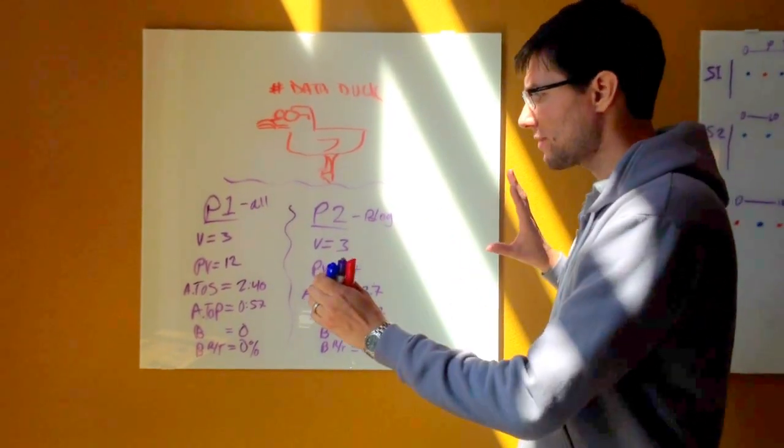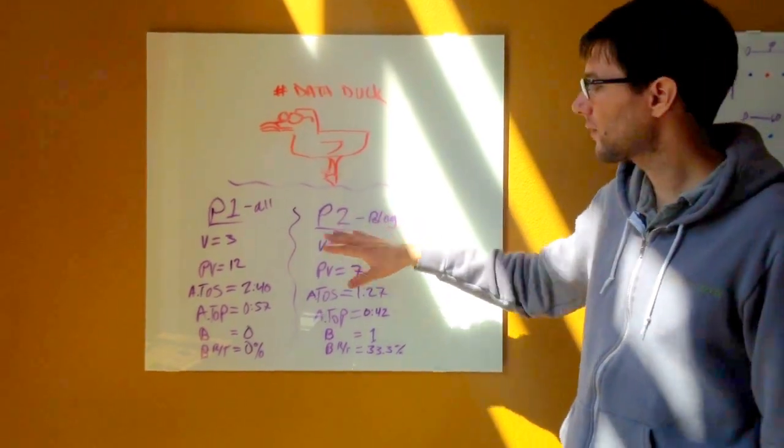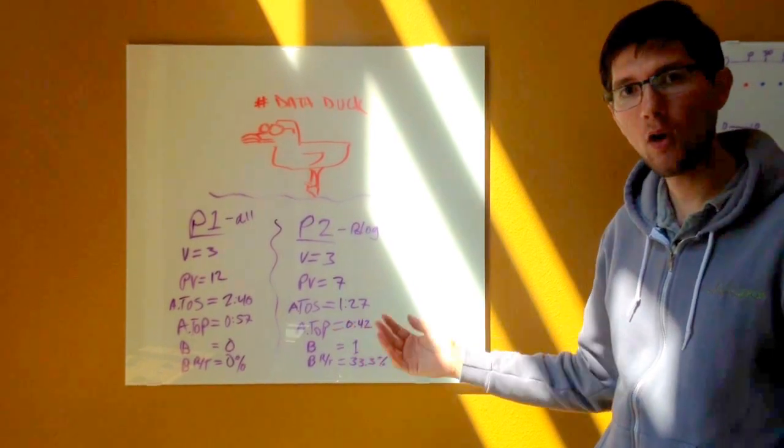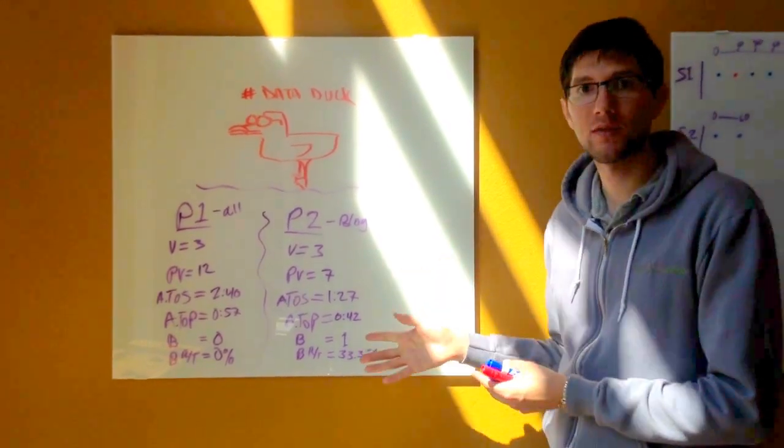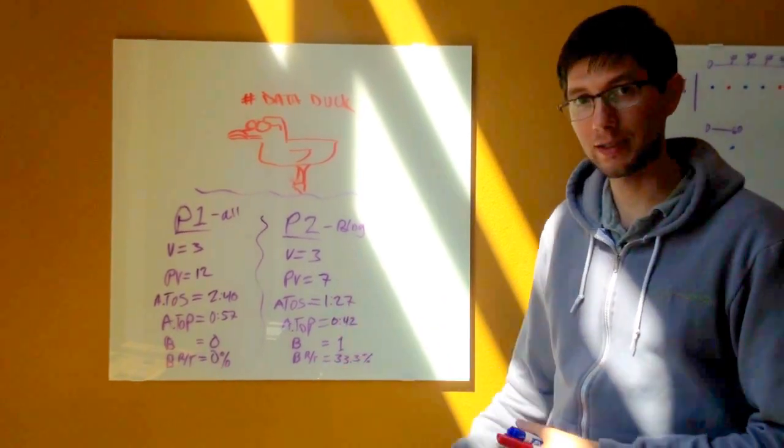So same website, two different views. This is a subset of the data, we still have three visits, fewer page views, and a lot of the metrics are different. How is that? So what I want to do is break this down into the details of these visits and show you how the numbers get calculated so that it makes more sense when you look at these.